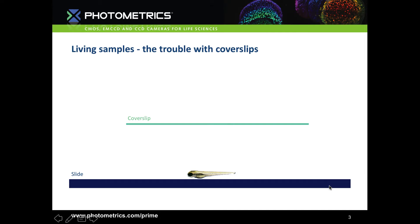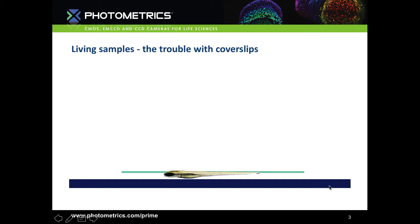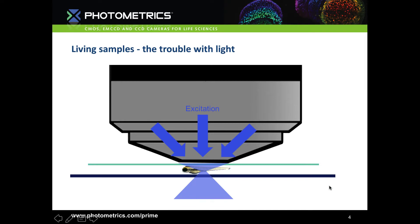Conventional microscopy on coverslips isn't compatible with live samples. There's no way we can squash a zebrafish under a coverslip without it being dead, which defeats the object of seeing live processes. Coverslips also reduce our ability to freely position the sample. Another problem is that high intensity light illuminates the whole sample, exciting all fluorophores in the light path, not just the plane of interest, causing heating and photodamage.